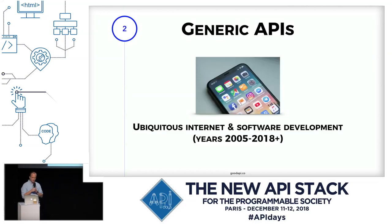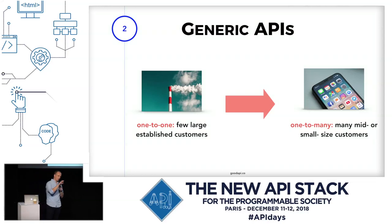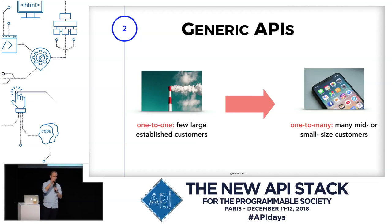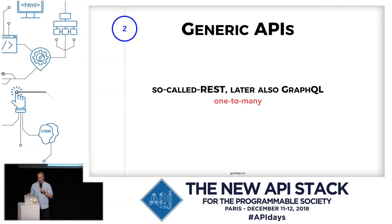As such, it was clear there was a need to move to the next era: generic APIs. This came with ubiquitous internet — almost everybody now has access to the internet, and programming is relatively cheap compared to 20 or 30 years ago, so almost everybody can make a call to an API. The move was from one-to-one integrations to one-to-many, where a provider wanted to serve many consumers. These APIs are usually fulfilled by so-called REST — based on the success of web architecture. We also hear about GraphQL, but both are one-to-many scenarios.